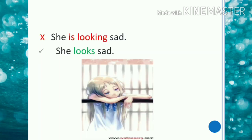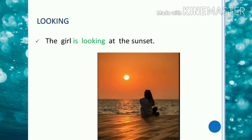'She is looking sad' is grammatically wrong because 'look' is a verb of appearing and we have to avoid using it in continuous form. So the correct usage is 'she looks sad.' But 'the girl is looking at the sunset' is correct, because here we are highlighting the action of looking.